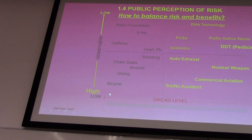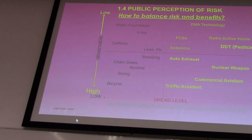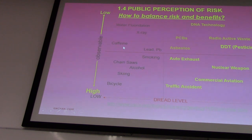Low observability — like X-ray, you cannot really see the radiation. Or caffeine — you drink coffee every day but you could hardly tell how much caffeine is in there. And on the x-axis, we have what we call dread level. Dread level is very high for something like pesticide — you spray it, then you see, oh, that's a pesticide.